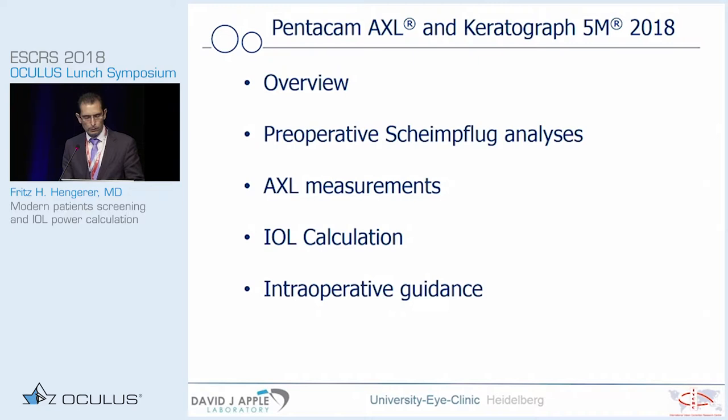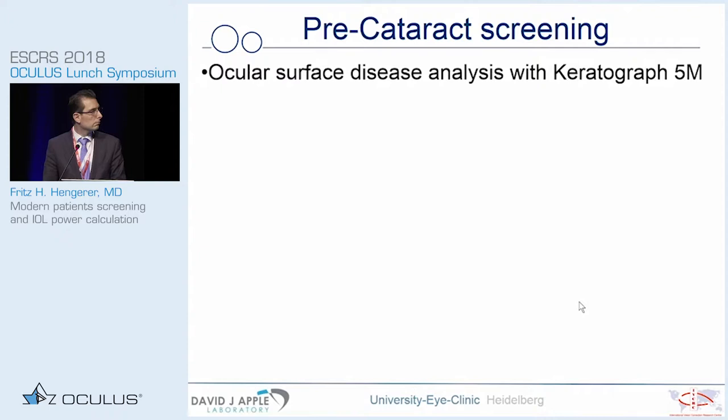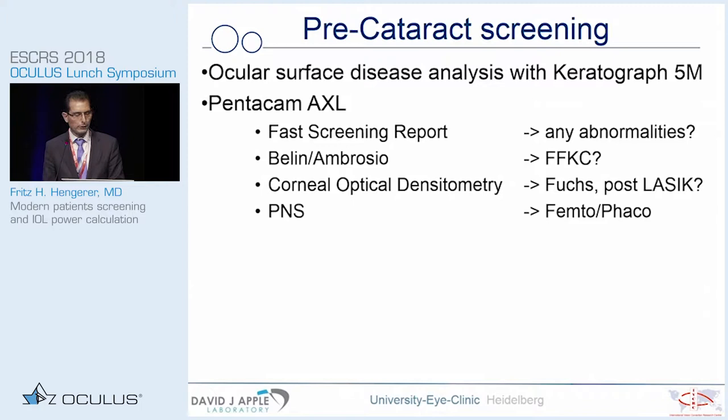This will be an overview about what you have sometimes already seen in the preoperative Scheimpflug analysis. We perform preoperative measurements before cataract surgery, including axial length measurements. IOL calculation and intraoperative guidance is something we have to spend time on. Cataract pre-screening routine and surface disease analysis with the topography graph is very important in order to have a stable situation in the anterior segment, both for the measurements and for the outcome for the patient.